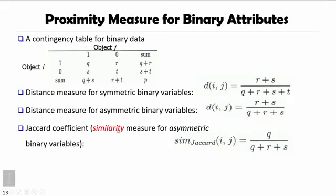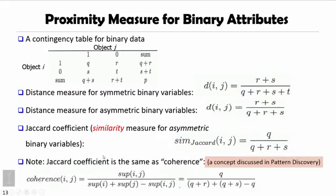Then for their similarity measure, that means how many times they are the same, actually it's q cases. For the q cases, we can see that's the same denominator. Actually, Jaccard coefficient was somehow rediscovered in the patent discovery field. They call this one coherence. Actually, this coherence definition, if you really map them into this contingency table, they have the same definition as Jaccard coefficient.